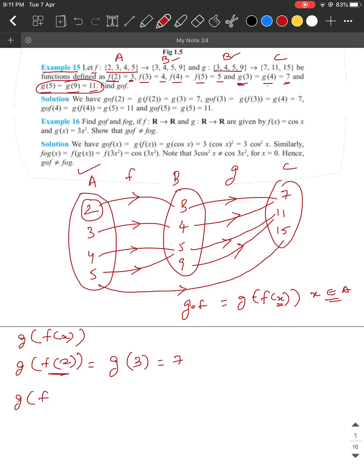Similarly, you have G of F of 3. We need to find G of F of 3. That is going to be G of, in the place of F of 3, G of 4. What is G of 4? G of 4 is also 7.